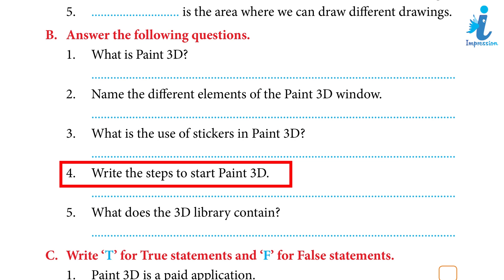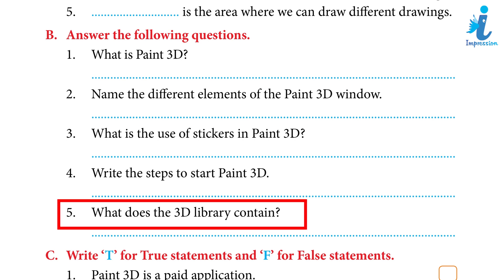How to start Paint 3D — Steps: 1. Click on the Start button. 2. You can choose the Paint 3D option from the menu, or type Paint 3D in the search box. 3. The Paint 3D window will open. What does the 3D Library contain? Answer: It is a collection of thousands of free 3D models divided into several categories.